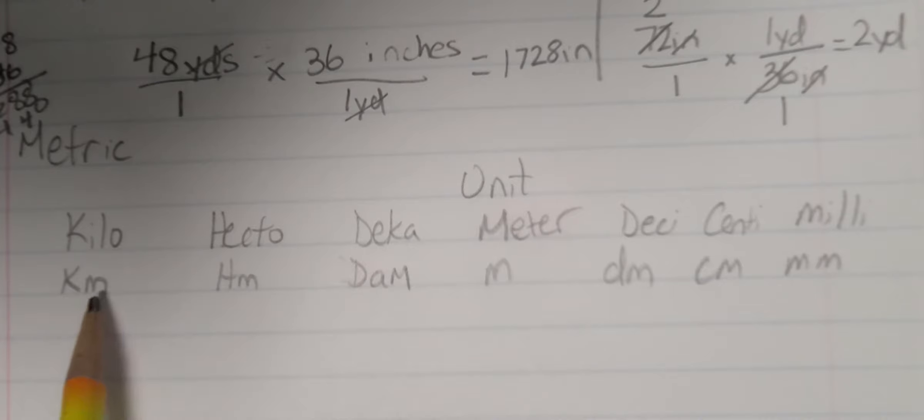So we have KM, this is abbreviation, HM, DAM, M, DM, CM, and MM.